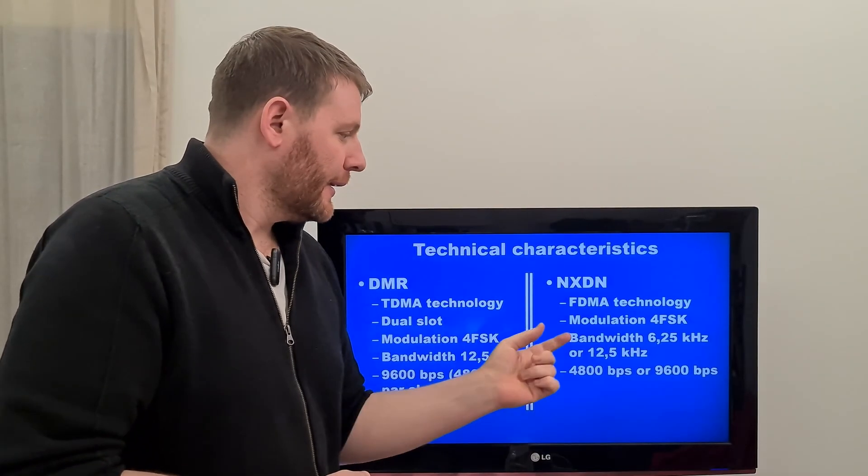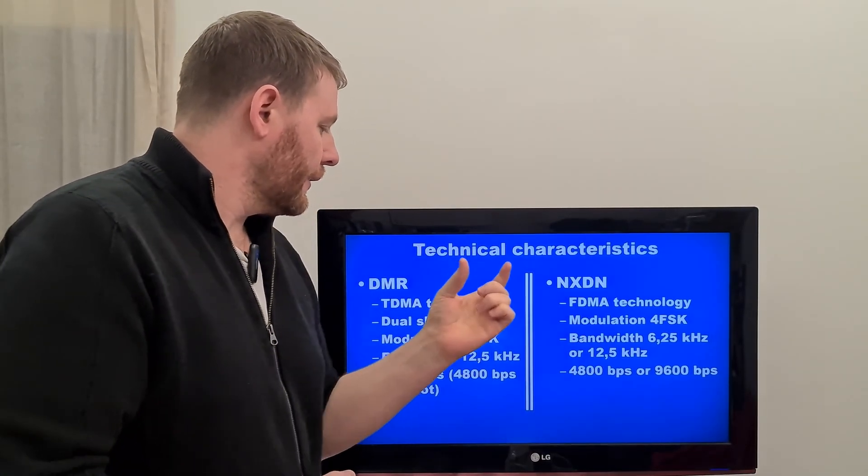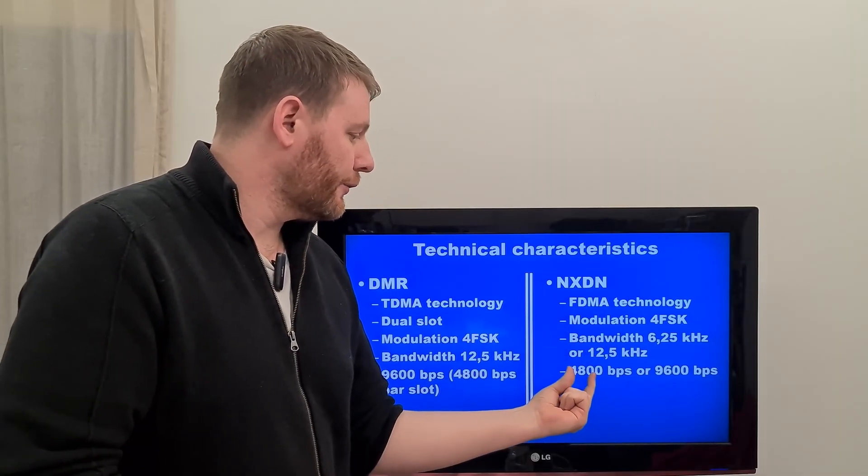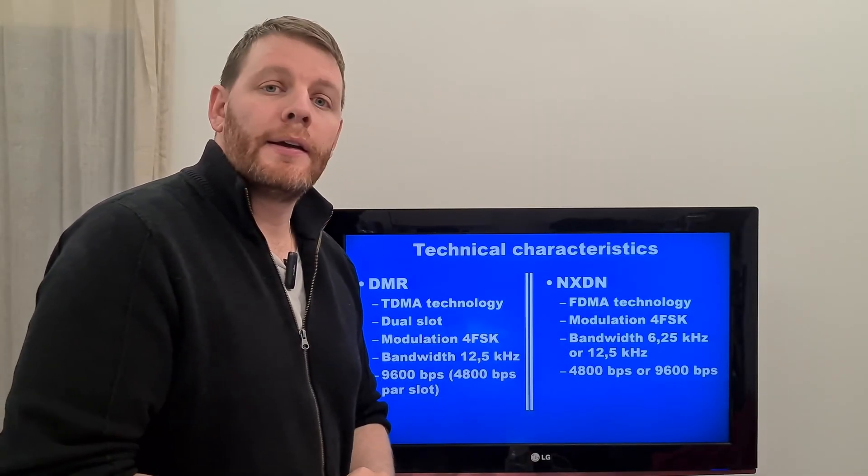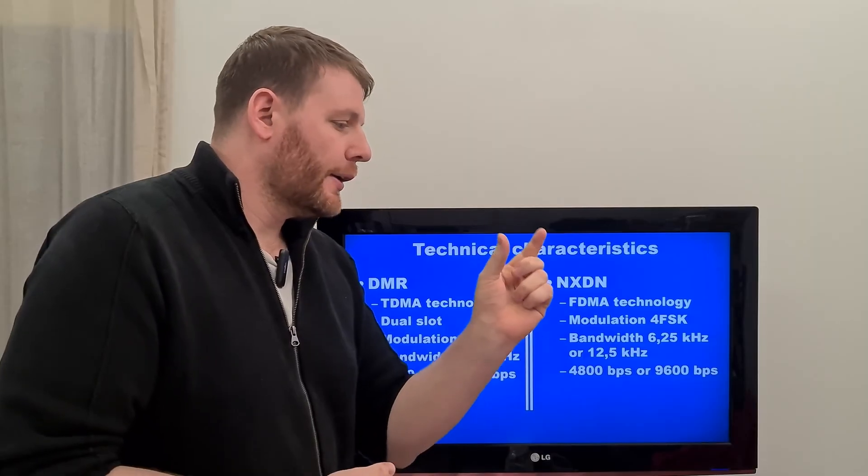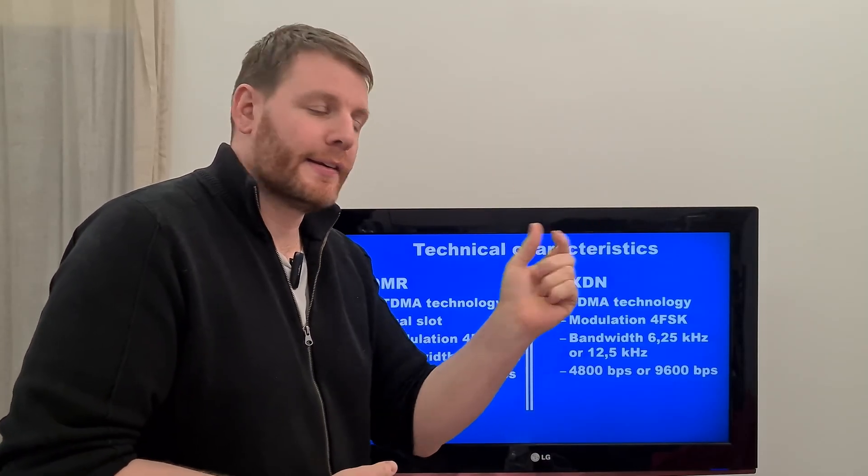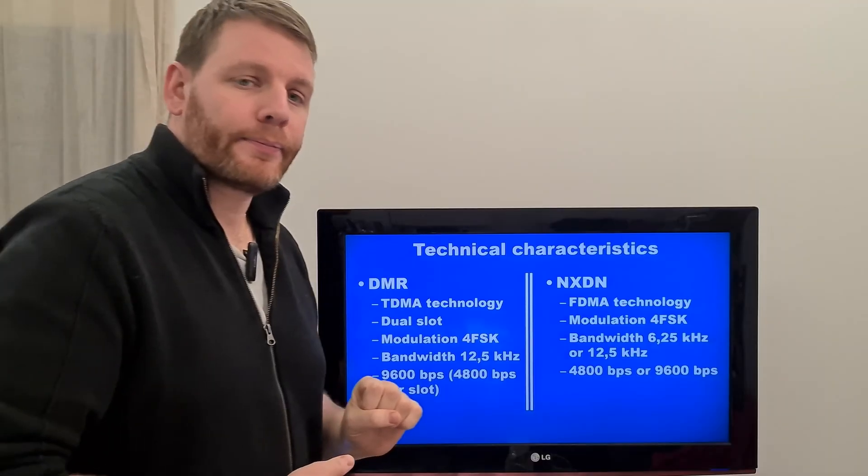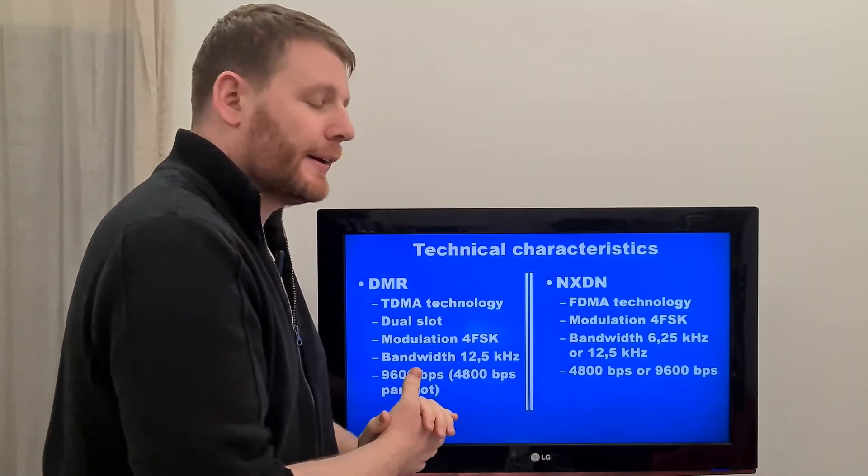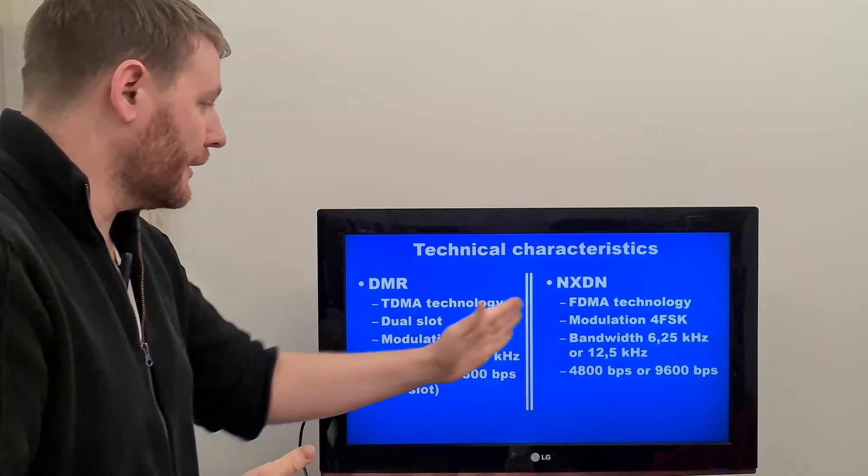So there is a half. The NXDN in 4.8 kbps use half less bandwidth than the DMR. This is the principal technical characteristic, main characteristic.